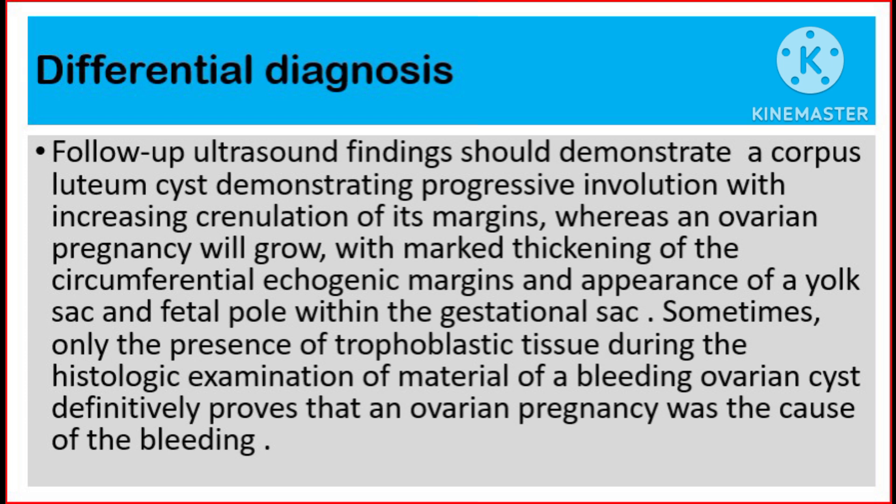Follow-up ultrasound findings should demonstrate a corpus luteum cyst demonstrating progressive involution with increasing crenulations of its margins, whereas an ovarian pregnancy will grow with marked thickening of the circumferential echogenic margins and the appearance of a yolk sac and fetal pole within the gestational sac. Sometimes, only the presence of trophoblastic tissue during histologic examination of material from a bleeding ovarian cyst definitively proves that an ovarian pregnancy was the cause of the bleeding.